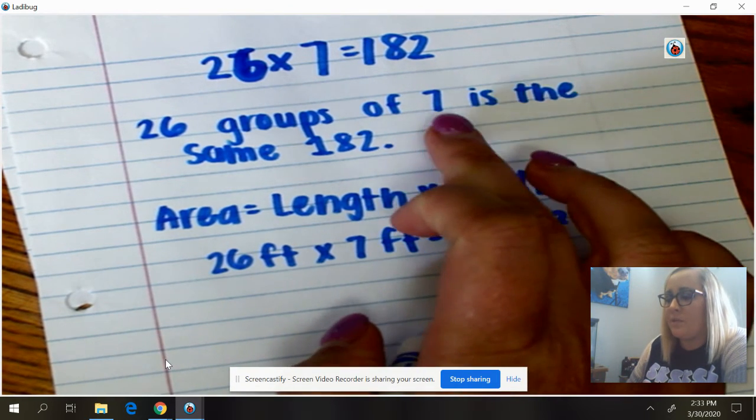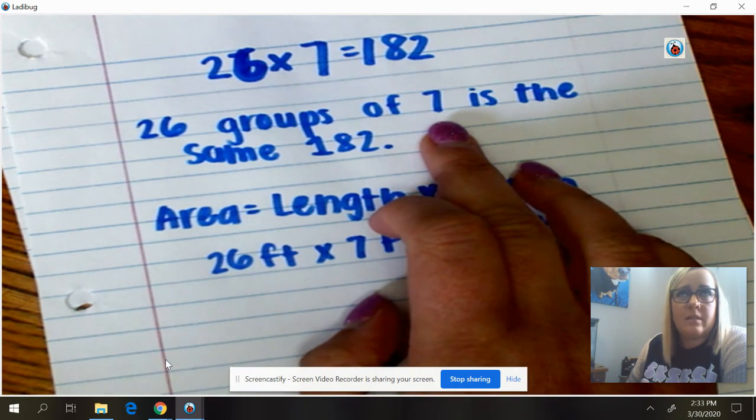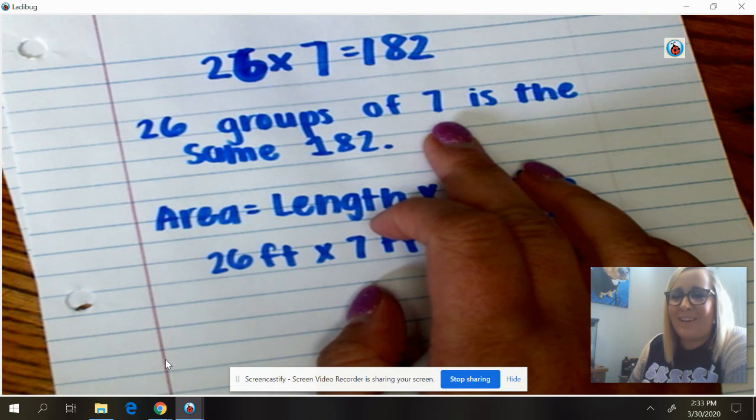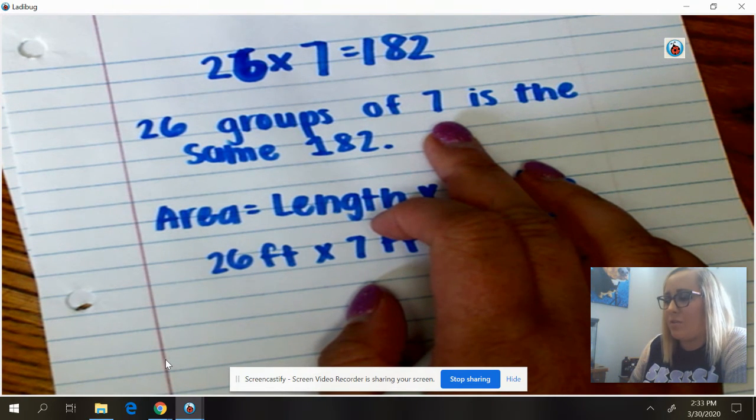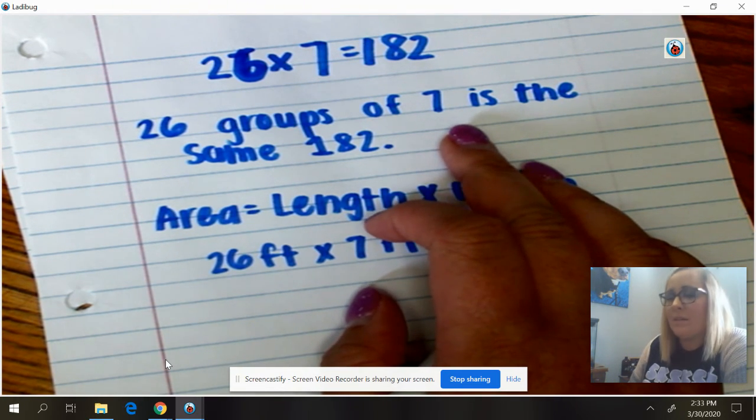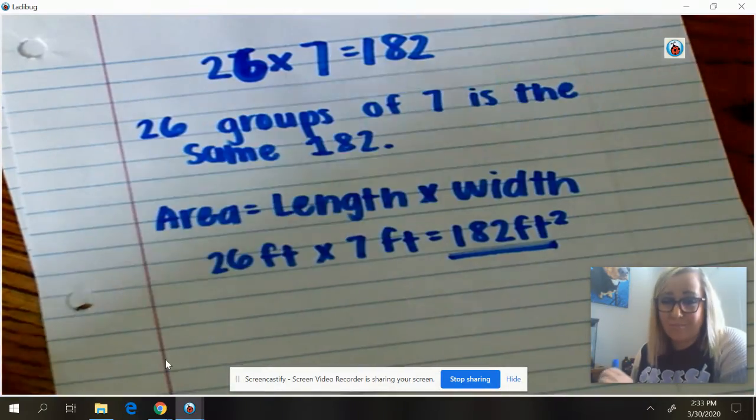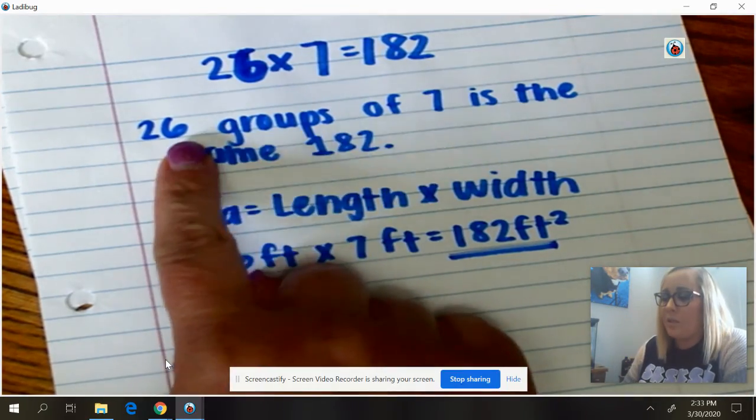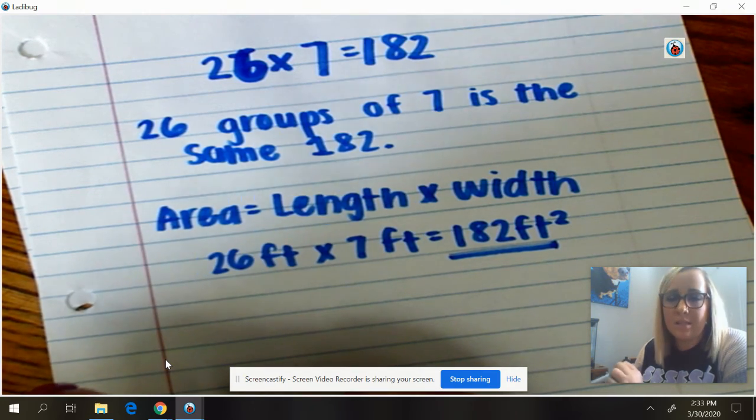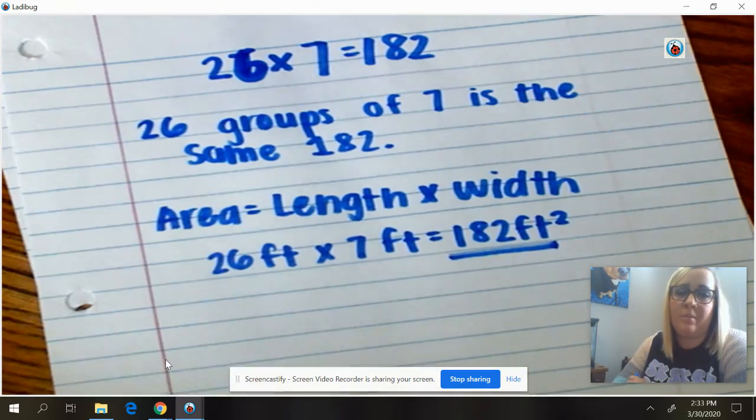Remember, groups of 7. So it needs to be something that's reasonable. Like, you're not going to go to the grocery store and buy 7 liters of soda, right? So just 26 groups of 7. Something that is reasonable for you to use as your problem solving.